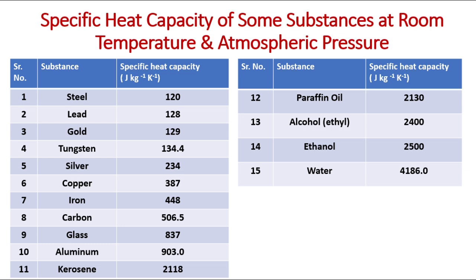Steel has a specific heat capacity of 120 J/kg·K. Lead has 128, gold has 129, tungsten has 134.4, silver has 234, copper has 387, iron has 448, carbon has 506.5, glass has 837, and aluminium has 903 J/kg·K.